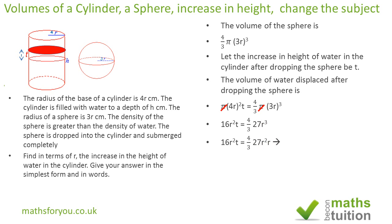And if we then divide both sides by R squared, we end up with 16 T is equal to 4 times 27 over 3. That's from R. Don't forget R there as well.